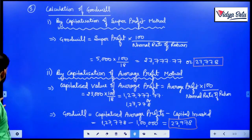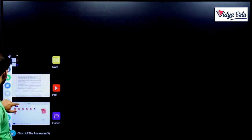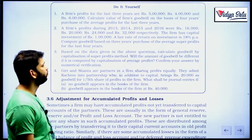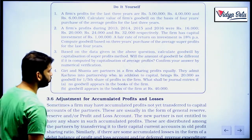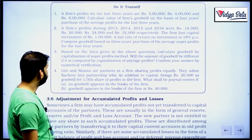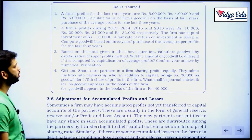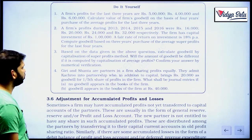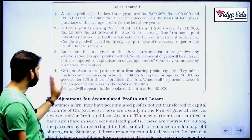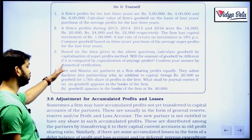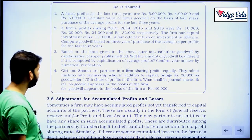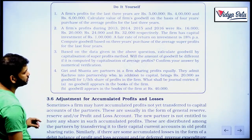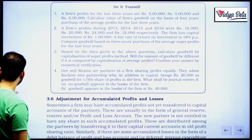The last question: Giri and Shanta are partners sharing profits equally — old ratio 1:1. They admit Kacharu into partnership, who in addition to capital brings 20,000 as goodwill for a one-fifth share of profits in the firm. What should be the journal entries if no goodwill appears in the books of the firm, or if goodwill appears in the books at 40,000?